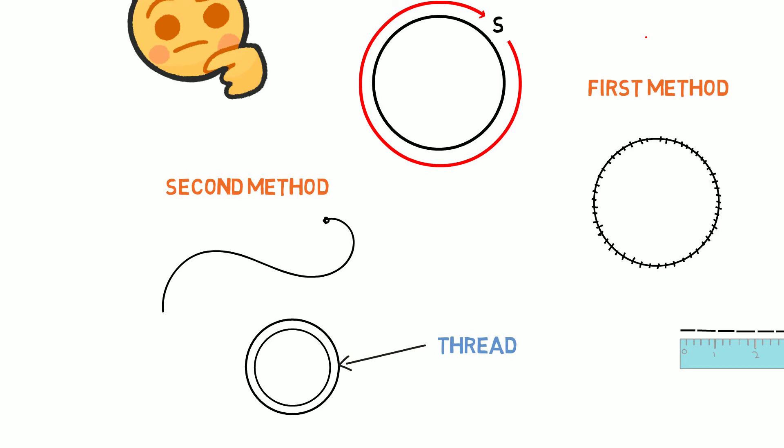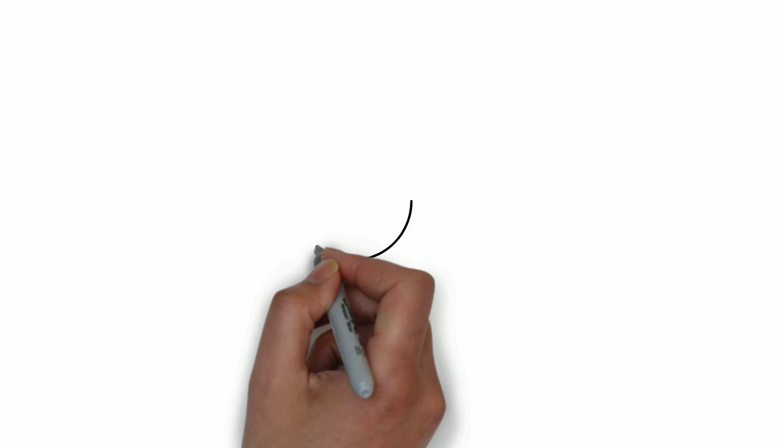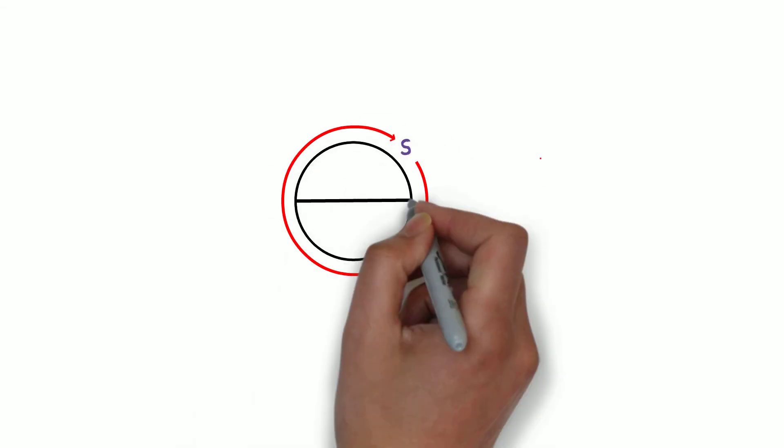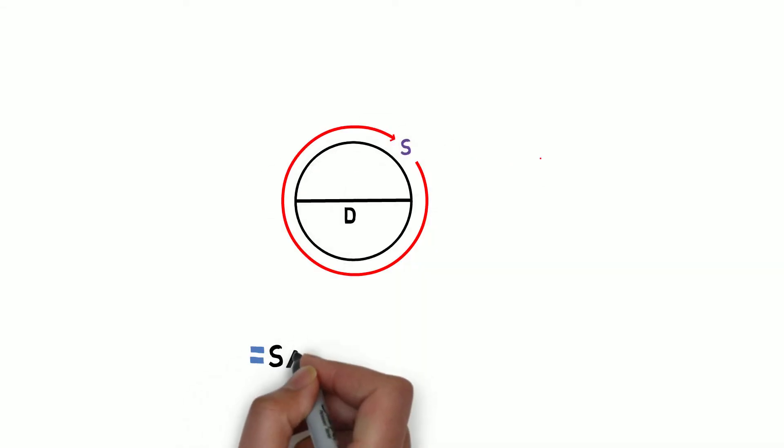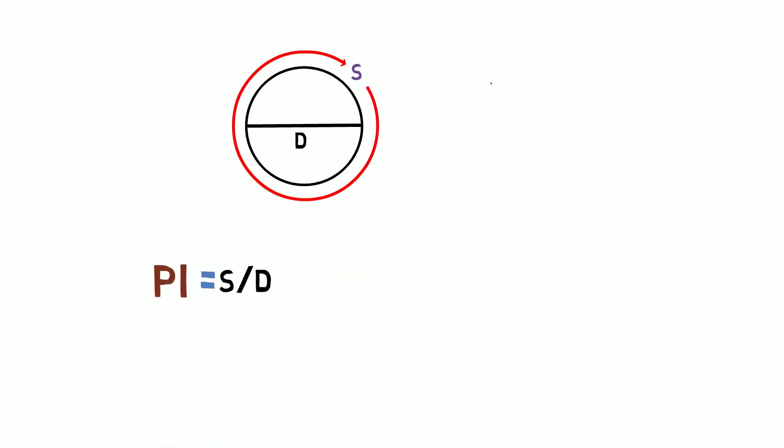So ancient people started to find out the boundary of a circle in a new way. They took circles of different radii and divided their circumference by the ratio of their diameters. And the result was surprising. They got the same value again and again. This value was known as pi.